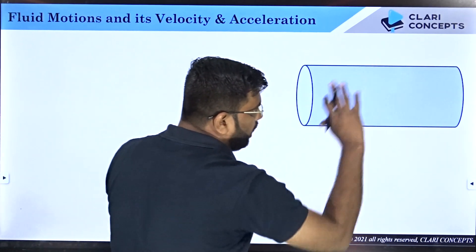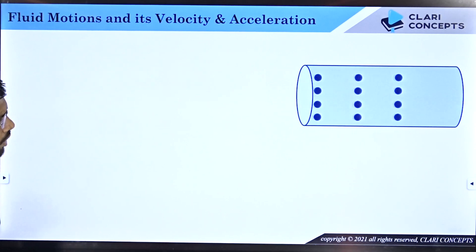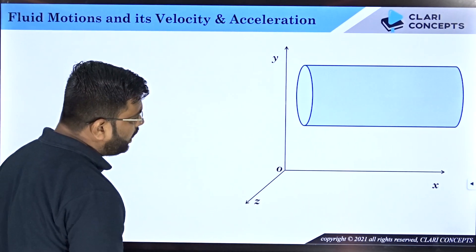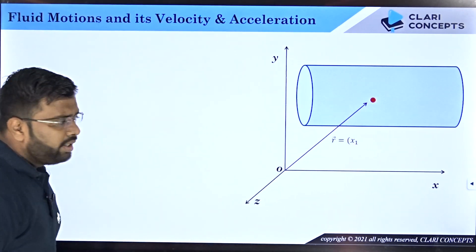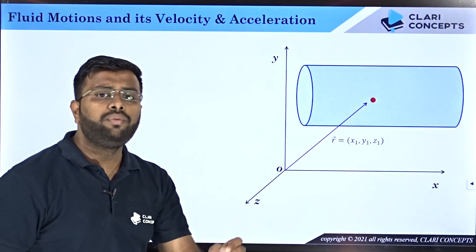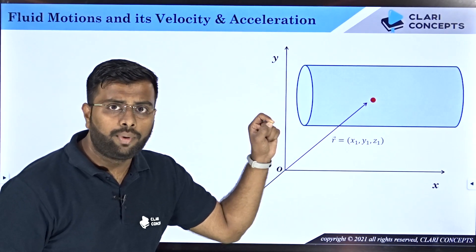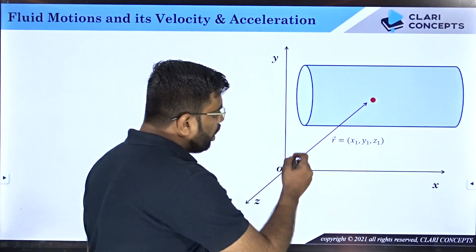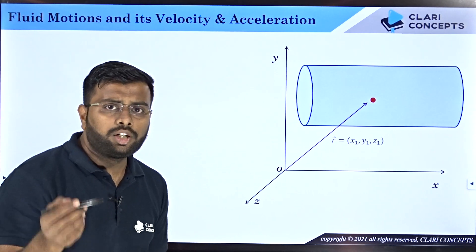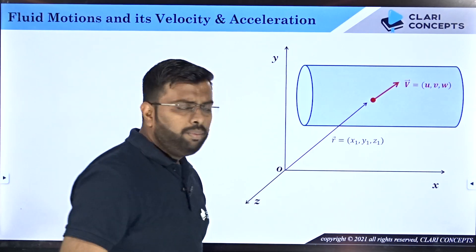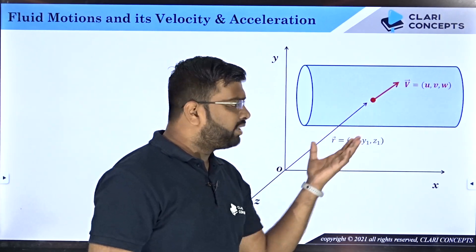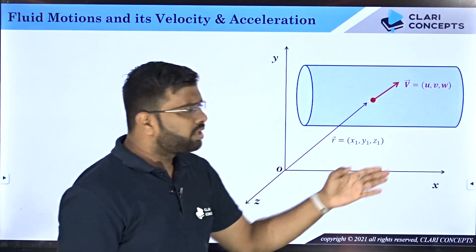Say for instance I have a fluid pipe through which a fluid is flowing. When fluid is flowing, I represent the system using a Cartesian coordinate system — x, y, and z — and from the origin I mark one point at location x1, y1, z1. To state the velocity of the fluid you must always specify the location and the time. Velocity is a vector quantity with three components: u in the x-direction, v in the y-direction, and w in the z-direction.